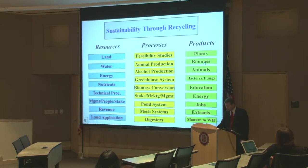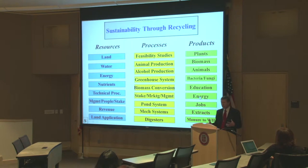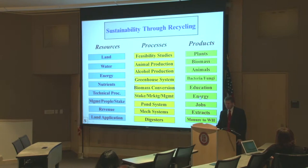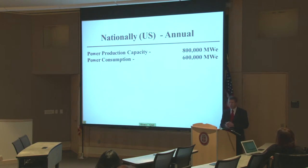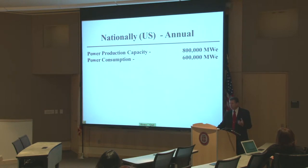Let's start by looking at the potential. Ask yourself: how much electrical energy does the U.S. consume? It turns out they have about 800,000 megawatts of power availability and are using somewhere in the neighborhood of 600 — probably now up to 630. But what does that mean to you?